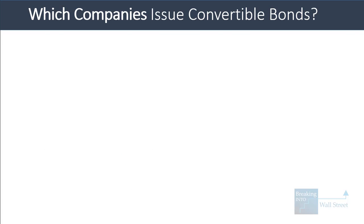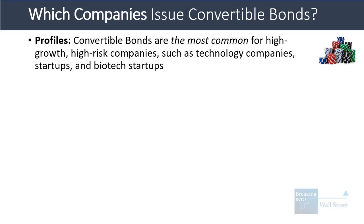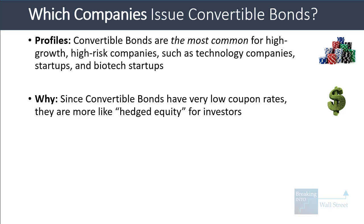Let's move to the types of companies that tend to issue convertible bonds. Convertible bonds are most common for high growth, high risk companies like technology companies in growth mode, tech startups, biotech startups, and firms like that. This is because convertible bonds have very low coupon rates — often zero percent — so they are much more like hedged equity than traditional fixed income from the point of view of investors.